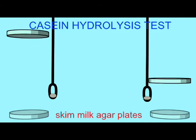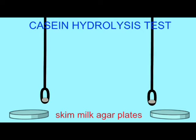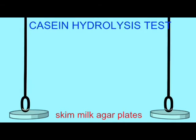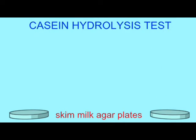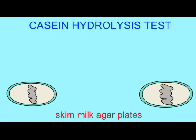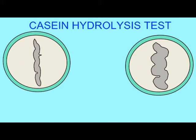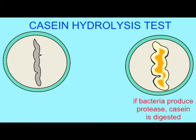Bacteria can secrete a number of enzymes into their environments to digest organic molecules there. To test for the secretion of proteases, one can include casein, a protein from milk, in the agar. After the bacteria are incubated, if there is a clear area around the bacteria, this is a positive test indicating that they secreted enzymes capable of digesting the protein casein — they secreted proteases.